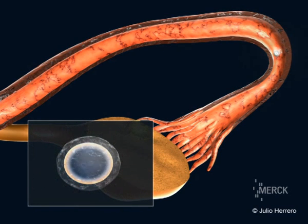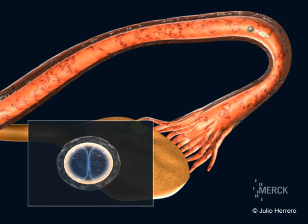One day following fertilization, a cell with two nuclei is observed, at which point it is called an embryo, and it begins to divide itself.